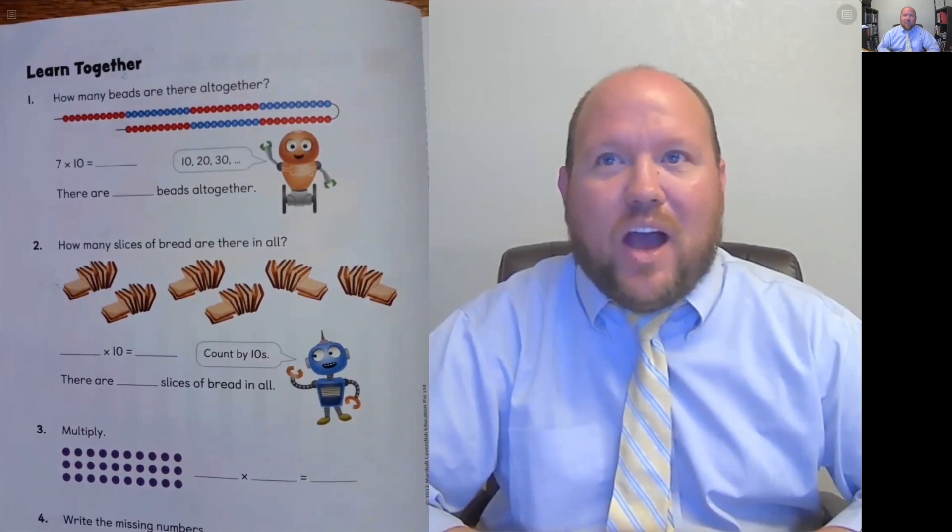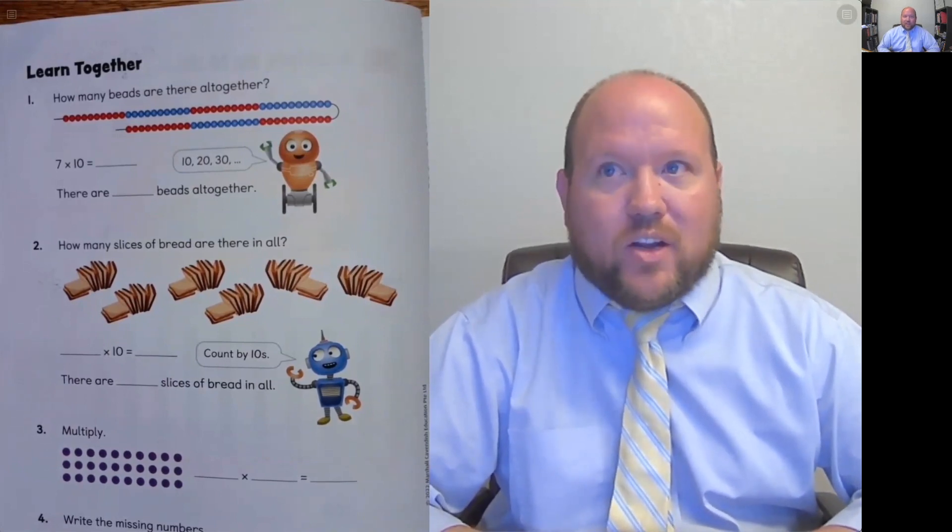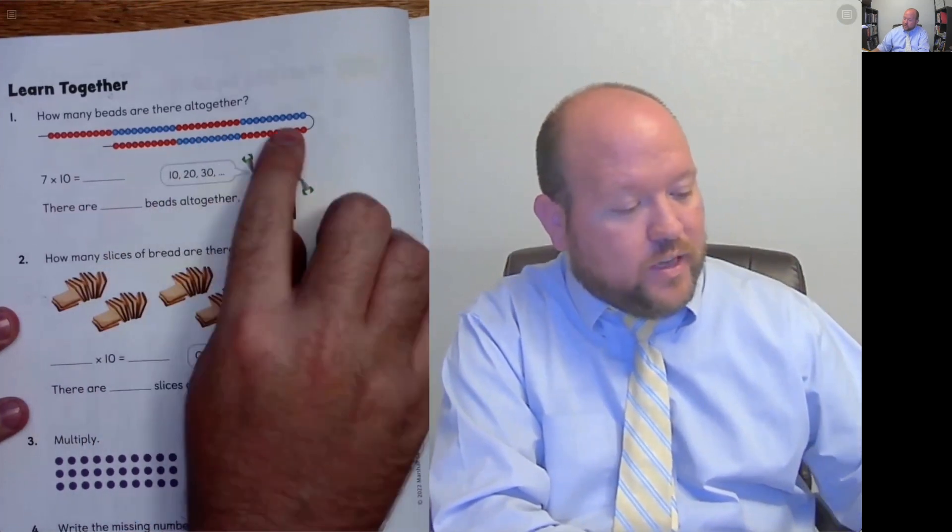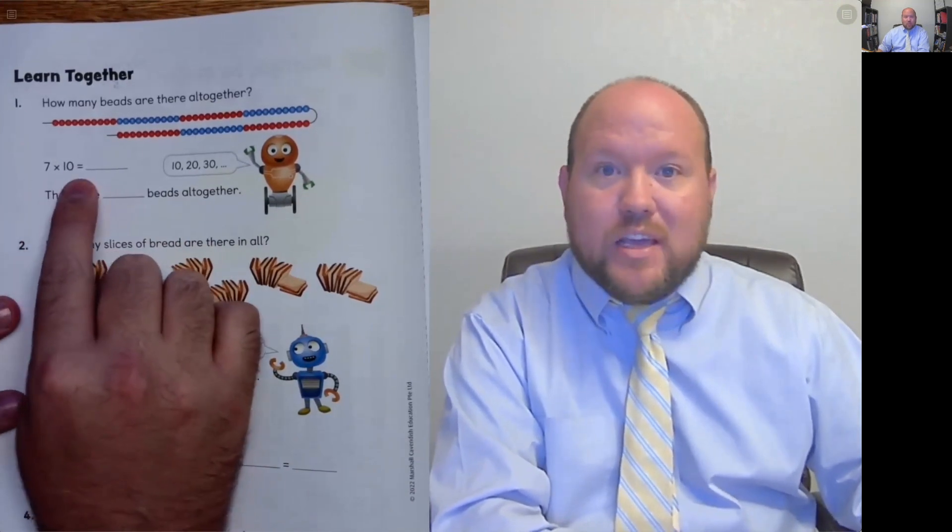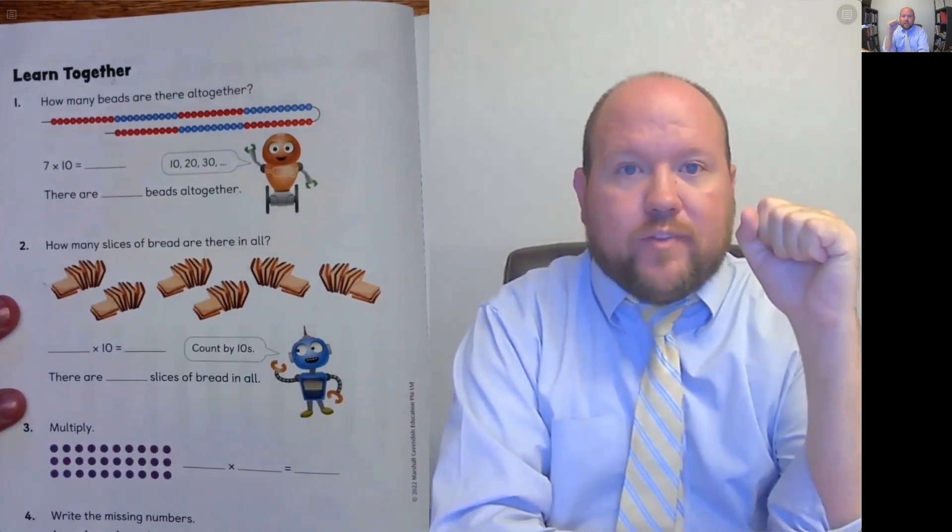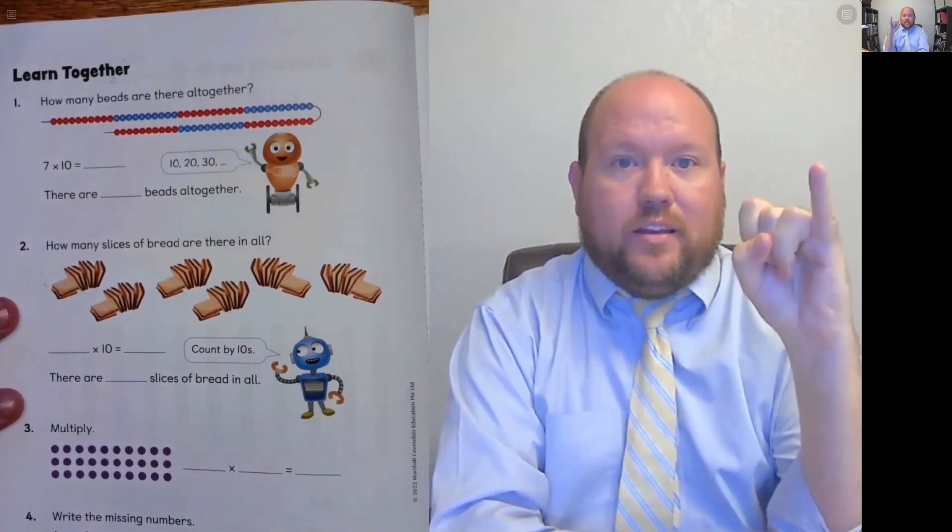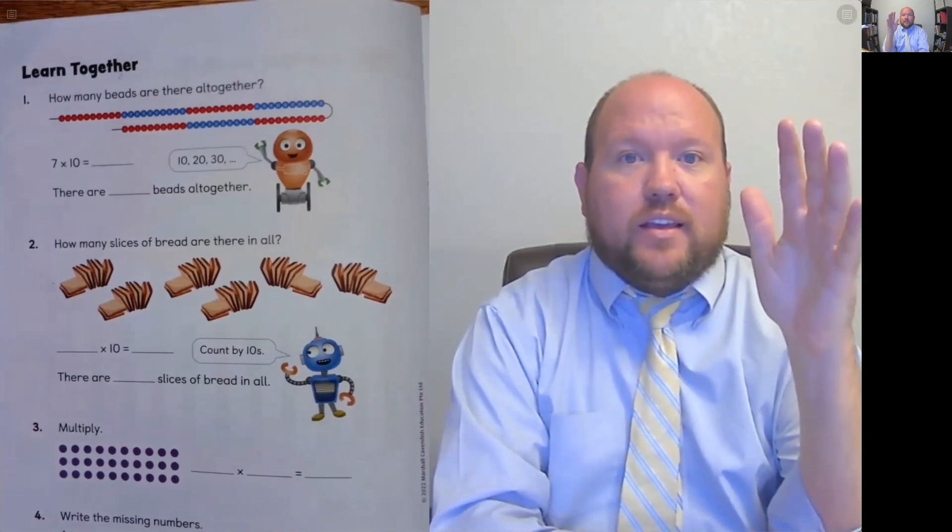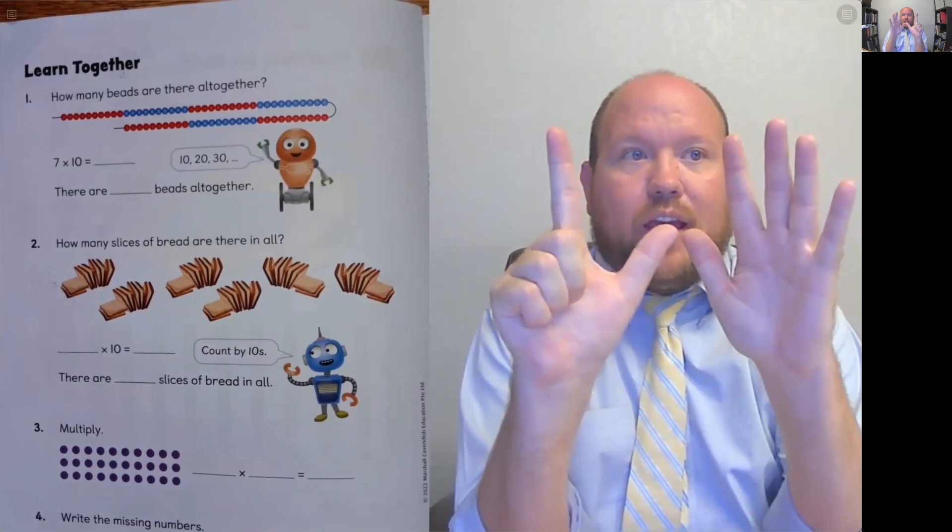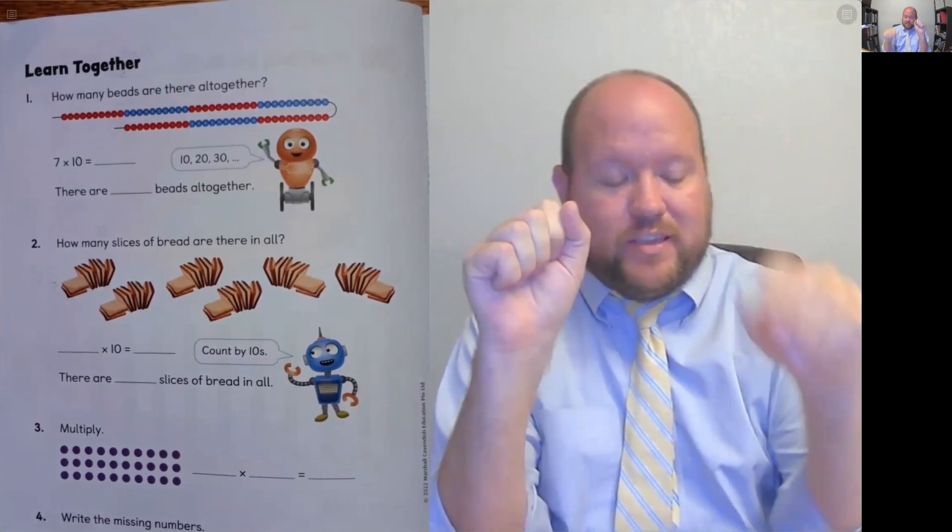So let's look at this learn together. How many beads are there all together? So here we see that there are 7 groups and there are 10 in each group. Now we want to move towards being able to do this using our math facts. So 7 times 10 equals, and we should know that answer. If we're not there yet, that's okay. So we can just count by tens. Let's use our fingers to help us. 10, 20, 30, 40, 50, 60, 70. So I have 7 beakers, so I got to 70. So the answer is 70. There are 70 beads all together.